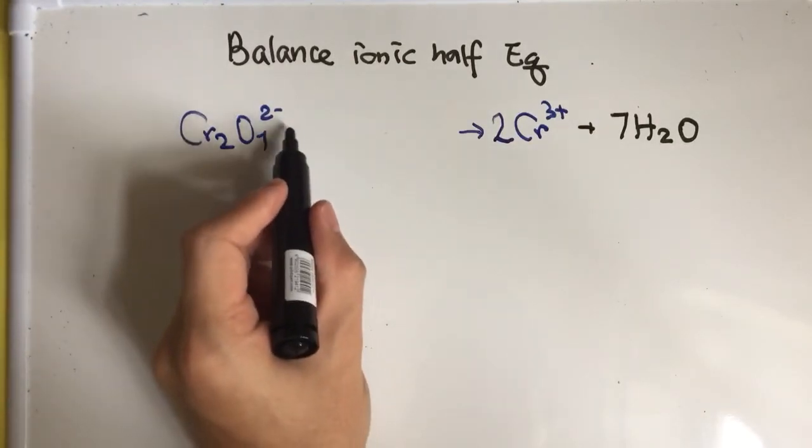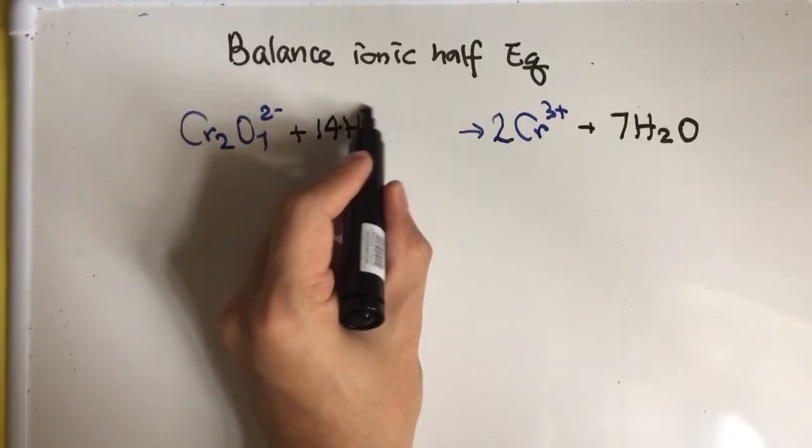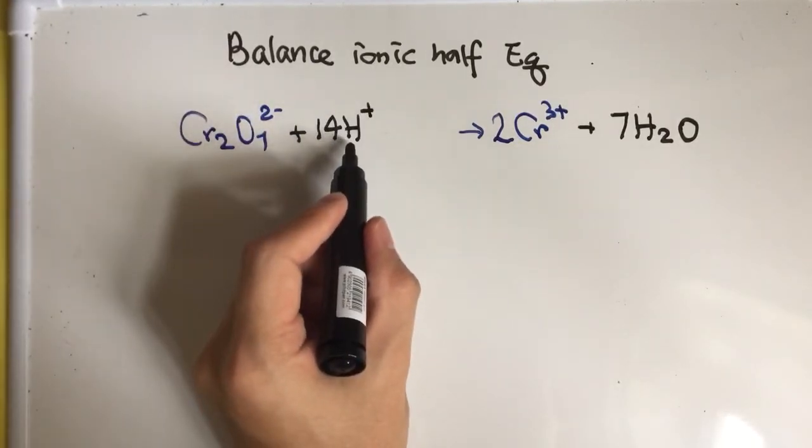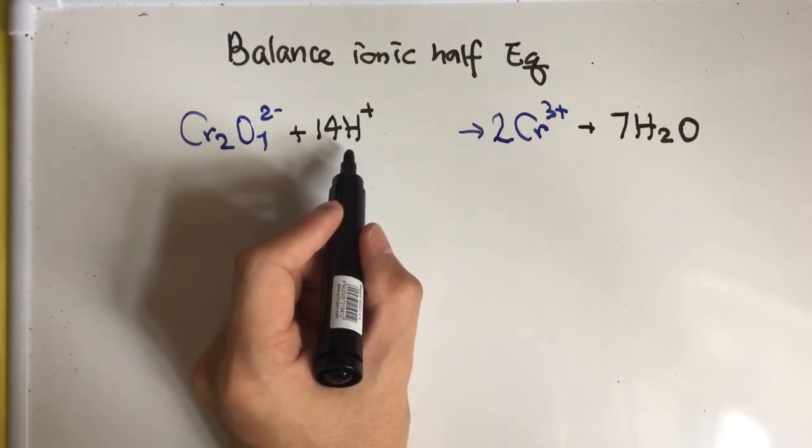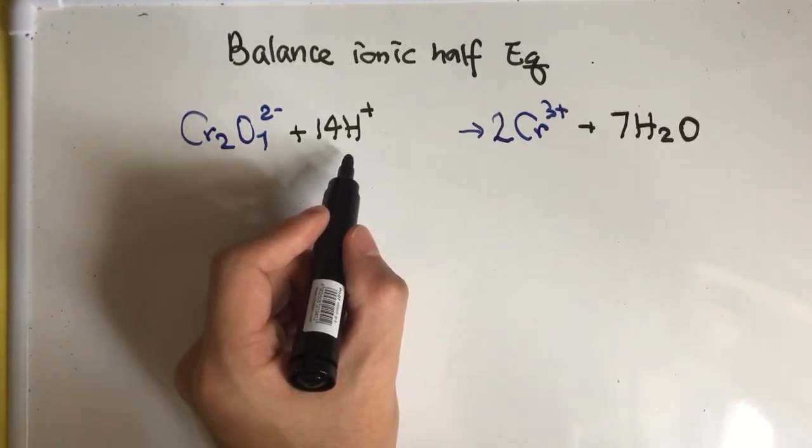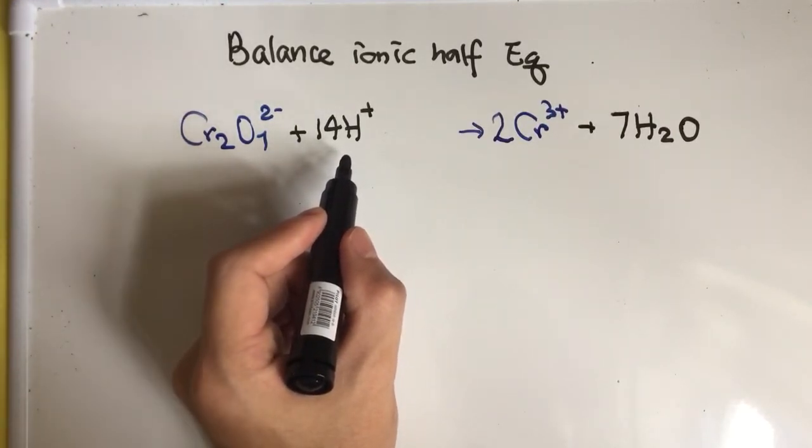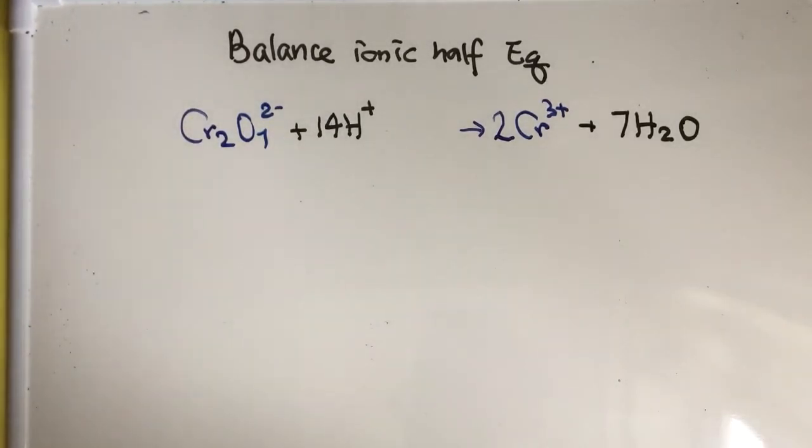You have to add 14 hydrogen ions. Hydrogen ion actually indicates that it is in an acidic medium. Sometimes it can be alkaline medium, so you may pay attention to the question where it states whether it's acidic medium or alkaline medium.